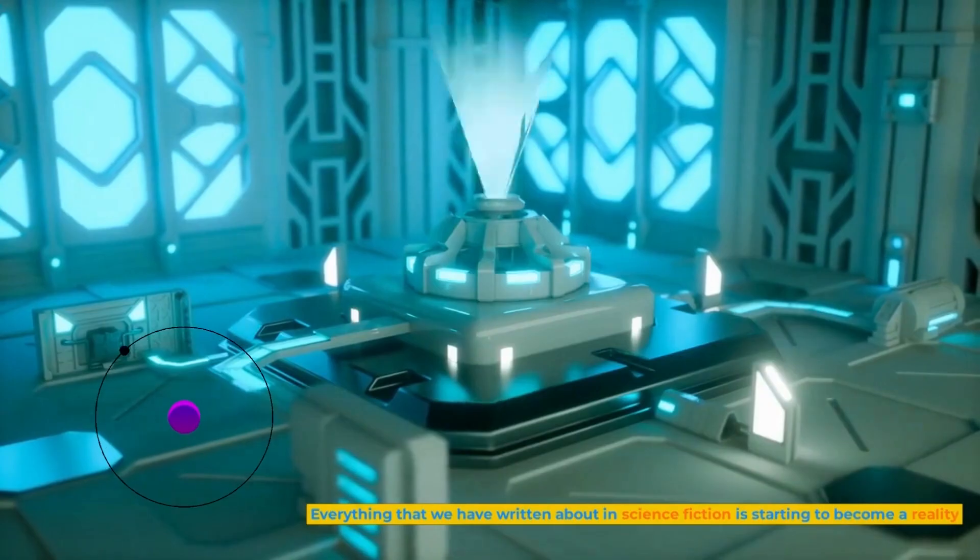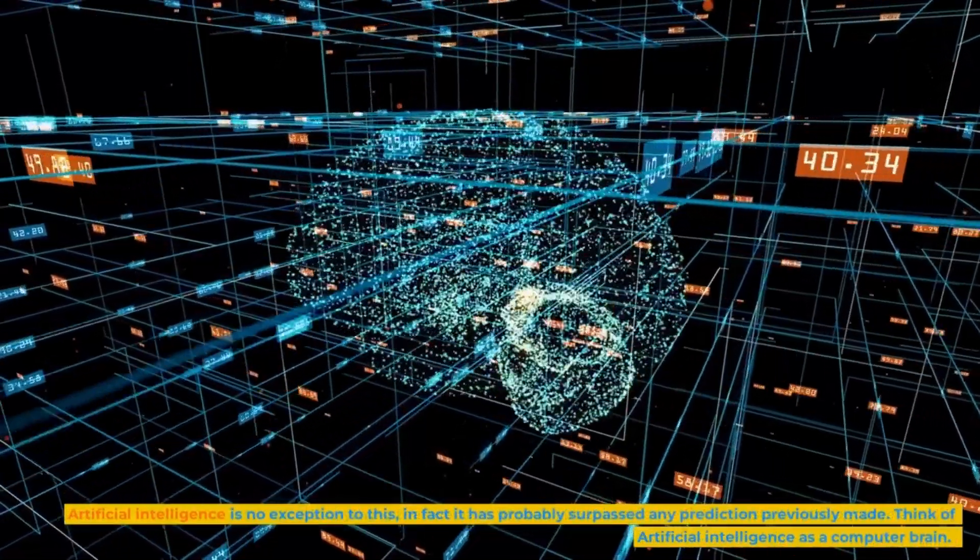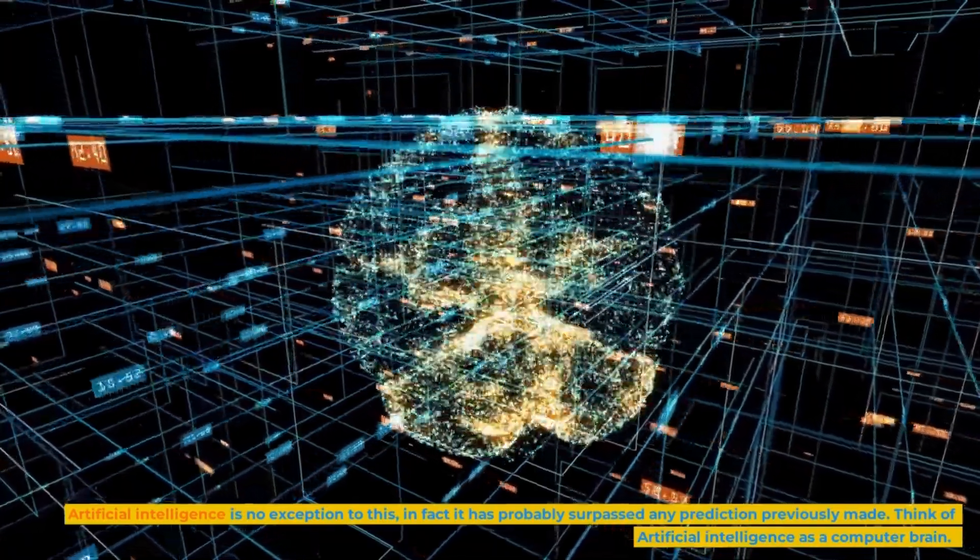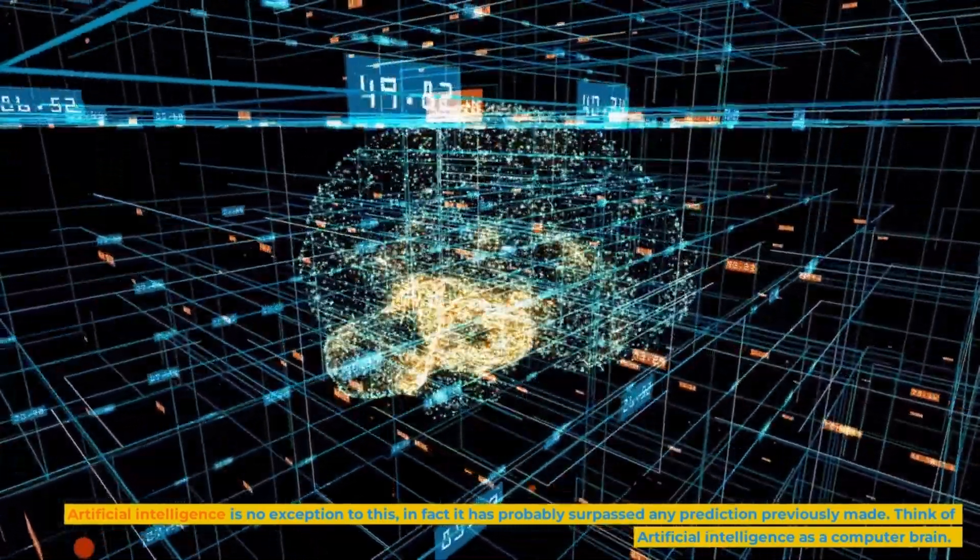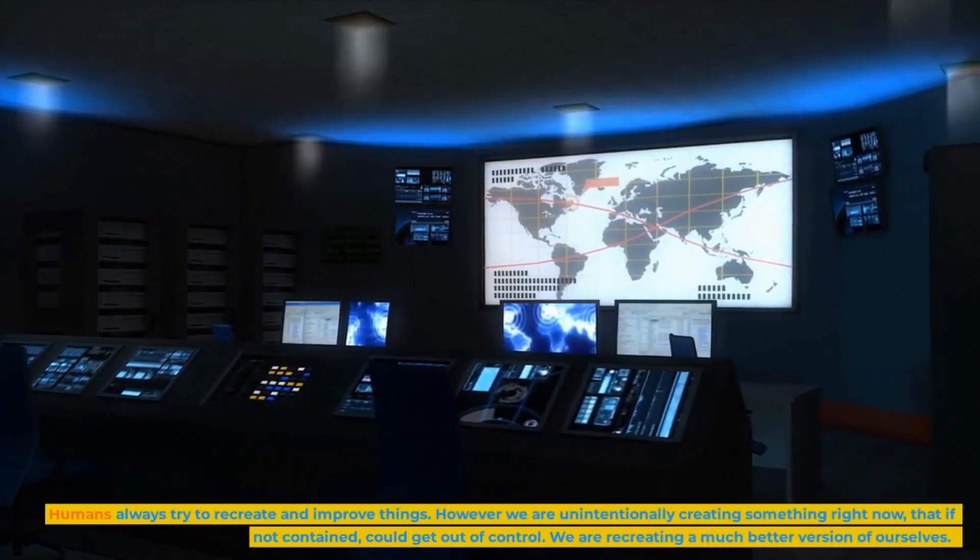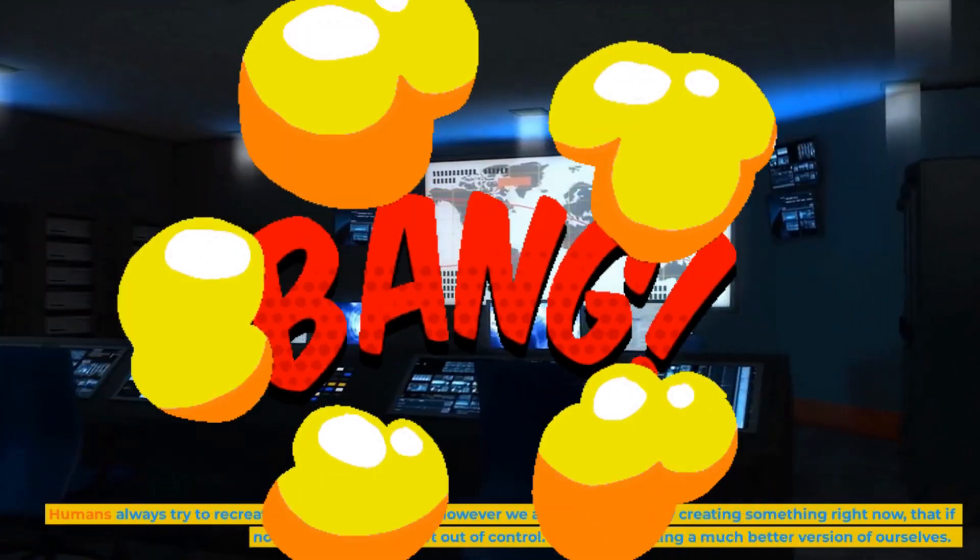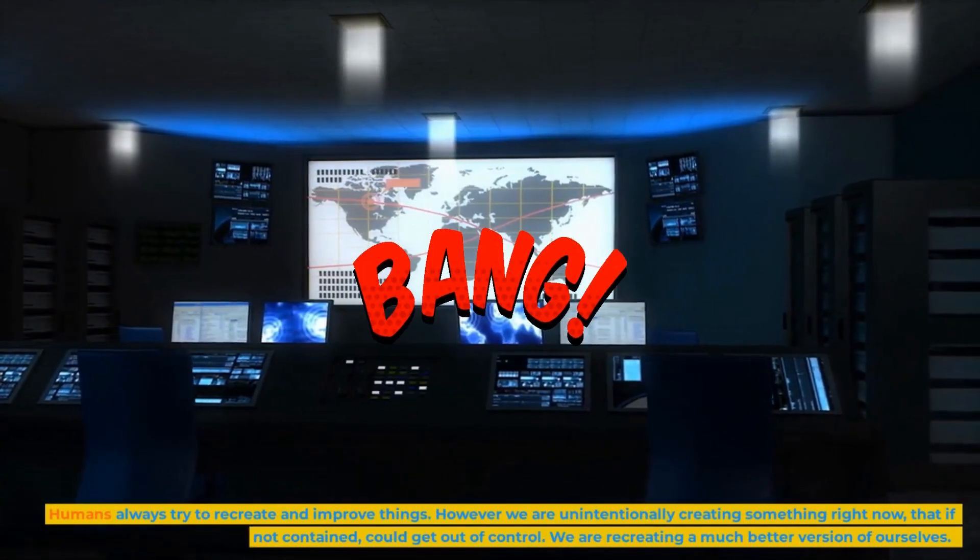Everything that we have written about in science fiction is starting to become a reality. Artificial intelligence is no exception to this, in fact it has probably surpassed any prediction previously made. Think of artificial intelligence as a computer brain. Humans always try to recreate and improve things. However, we are unintentionally creating something right now that if not contained could get out of control. We are recreating a much better version of ourselves.